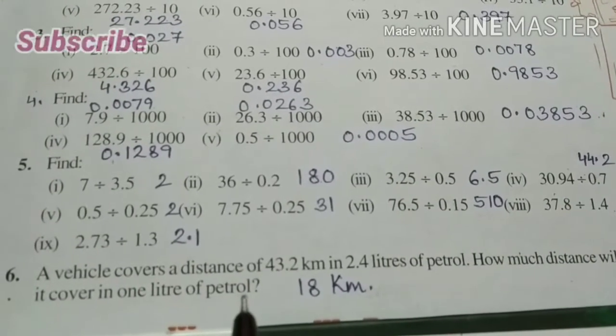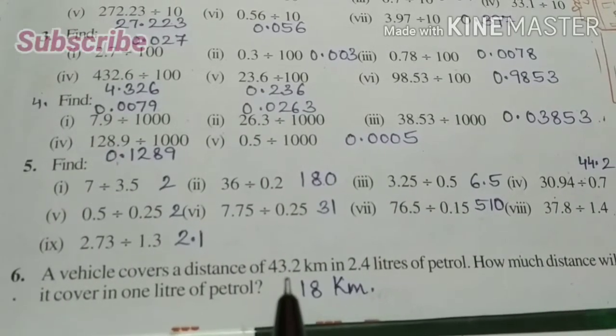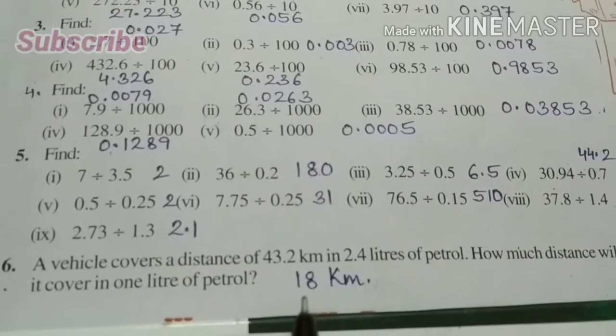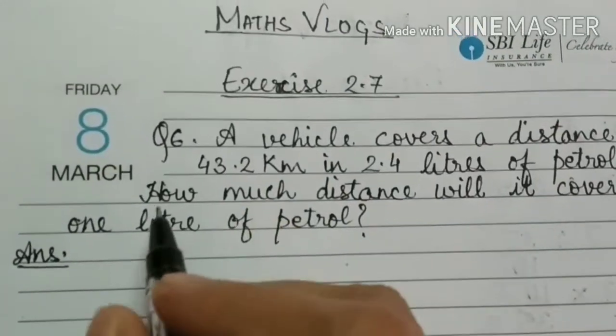So in 2.4 liters it covers 43.2 kilometers. We have to find the distance in one liter of petrol. Here I have written the question. You know how to write the answer.